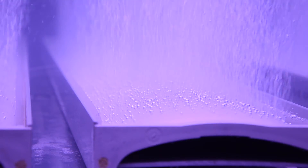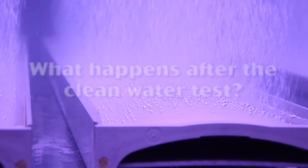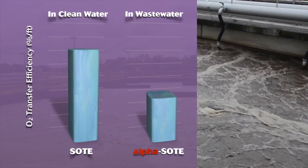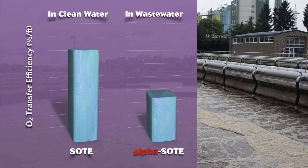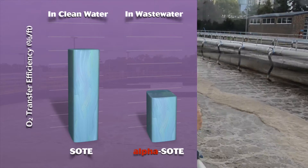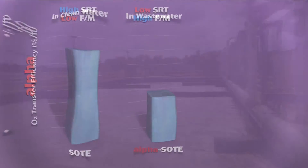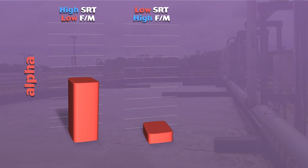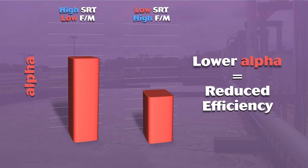But clean water transfer is only part of the story. The more important question you should be asking about your diffusers is: what happens after the clean water test? In real-world applications, the environment for these diffusers is not so friendly. The presence of surfactants such as detergents and biologically produced materials will inhibit transfer across the bubble surface into the wastewater. Plant design and operation can also impact the alpha factor — low SRT or high F to M generally reduce alpha and therefore lower efficiency.